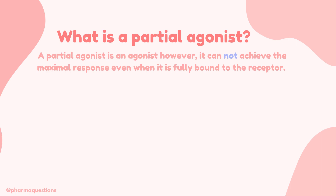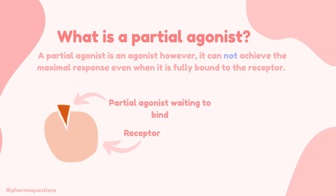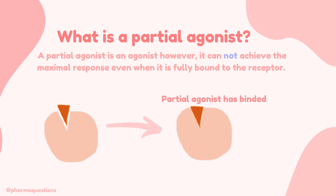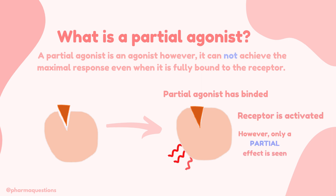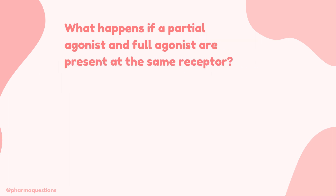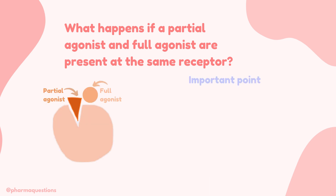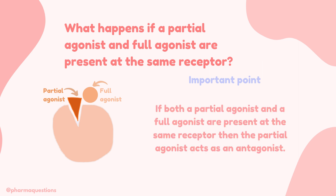Here we have a receptor and a partial agonist waiting to bind. When the partial agonist has bound, the receptor gets activated however only a partial effect is achieved. So what happens if a partial agonist and a full agonist are both present at the same receptor? Well, the partial agonist will act as an antagonist.